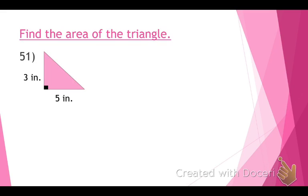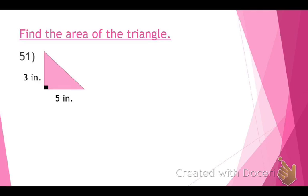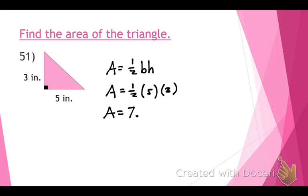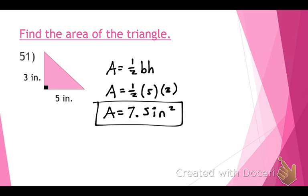Same idea — find the area of the triangle. When you think you have the correct answer, stand beside your chair. The formula is A equals one-half times base times height. The base is 5 and the height is 3: one-half times 5 times 3 equals 7.5 inches squared. Why do we square the inches? Because we found the area. Remember: every time you're asked for area on your final, make sure your units are squared.